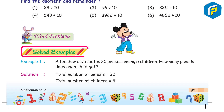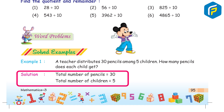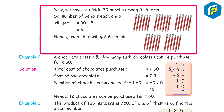Word problems. Solved example. Example 1: A teacher distributes 30 pencils among 5 children. How many pencils does each child get? Solution: total pencils = 30, total children = 5. Number of pencils each child gets = 30 ÷ 5 = 6. Hence, each child will get 6 pencils.